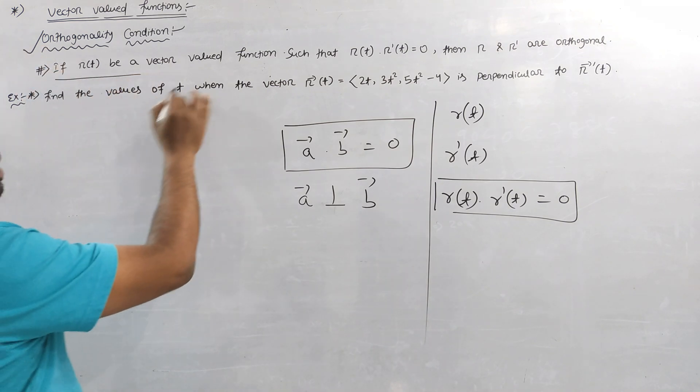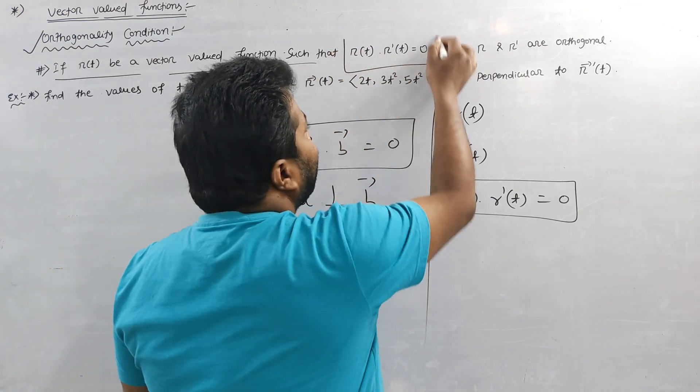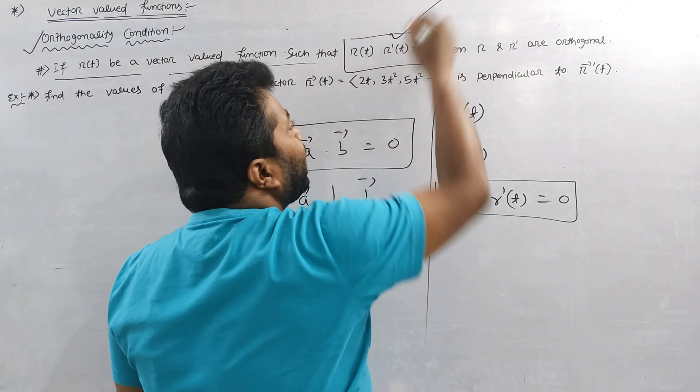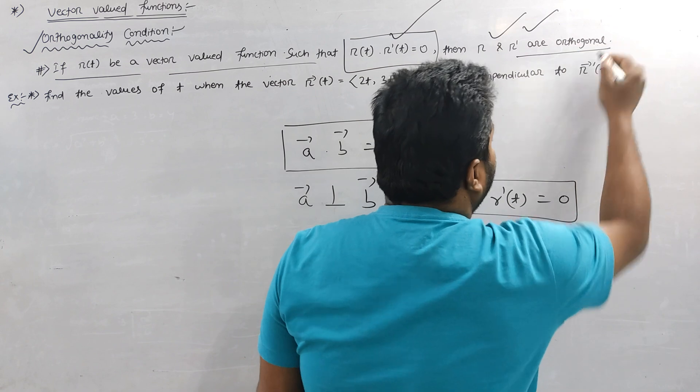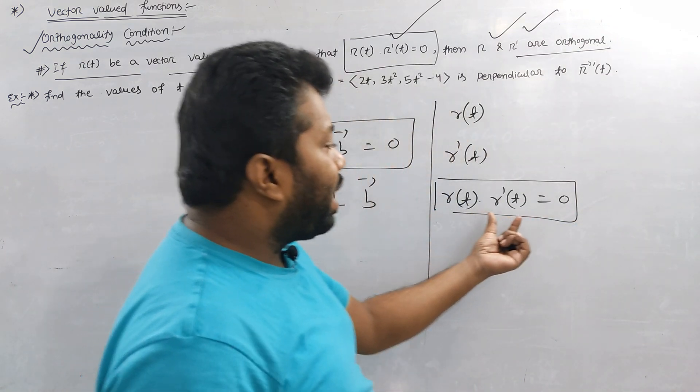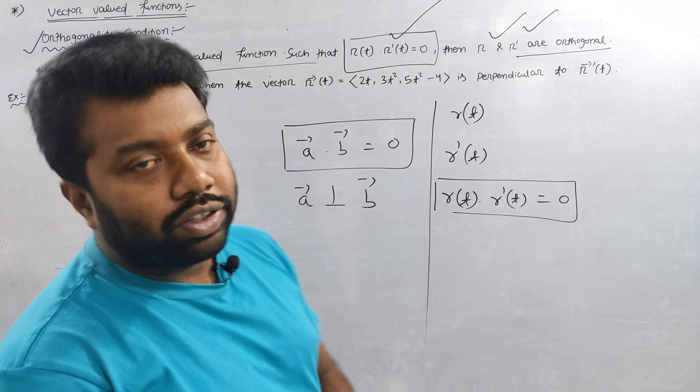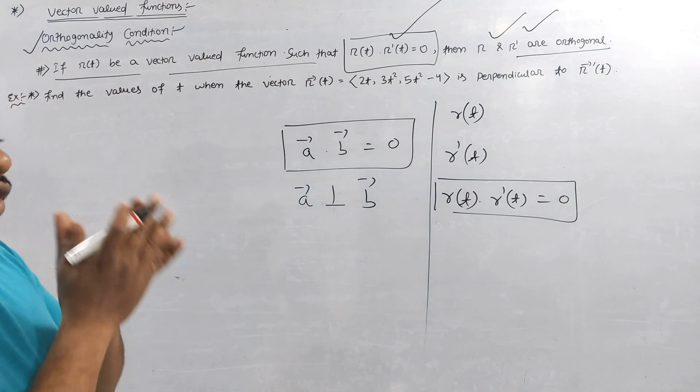If R of t is a vector-valued function such that R of t dot R dash t is equal to zero, then R of t and R dash t are orthogonal to each other, which is a simple concept.